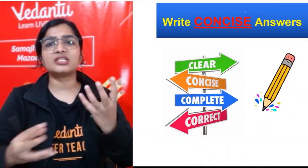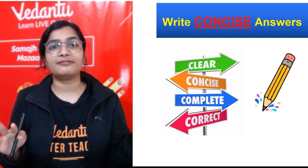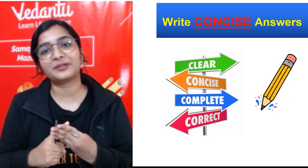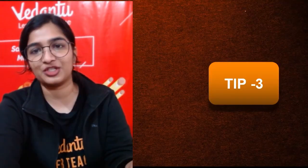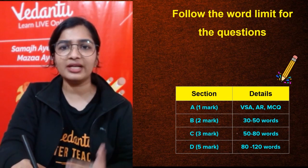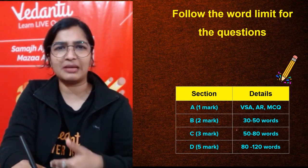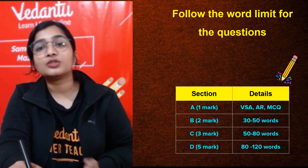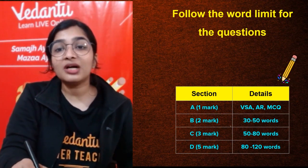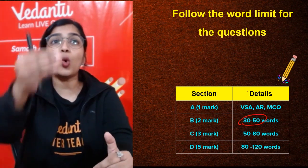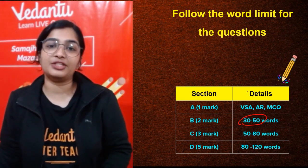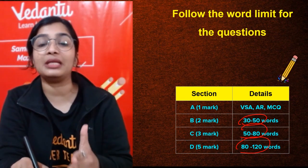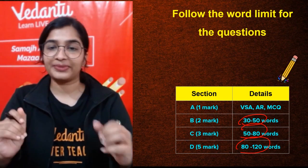Tip number two: write concise answers. What they have asked, that is enough, and your answer should be very clear and precise. It should be clear, concise, complete, and correct. Tip number three: follow the word limit. You all know the word limit. One marker is only one mark, one word, or most of them will be reasoning or assertion MCQ type, so you don't have to even write a sentence. Two marker, 30 to 50 words is enough. Then why do I have to write the whole story about that reaction or that definition? For three marks, it is 50 to 80 words. Five marks, it is 80 to 120 words. I have always told you managing time is very important. Always make sure to stay in the word limits. Even if you know the answer, it's fine.